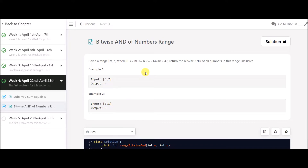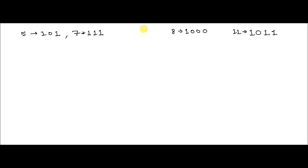So how are we going to do this? Let's jump to the explanation part first and then go to the solution. I have taken these two examples through which we'll look at how we are going to solve this. On my left is the example given to us. 5 is written in binary, and 7 is written in binary. The higher number is 7, the lower one is 5, so we need to find the AND of 5, 6, and 7.